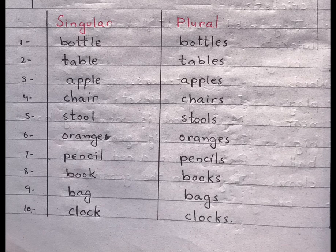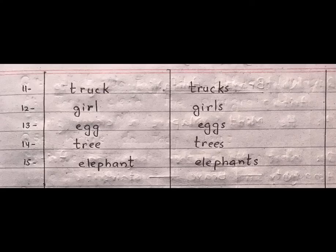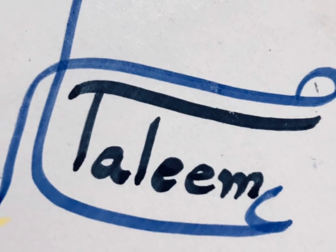Singular and plural list. Bottle — bottles. Table — tables. Apple — apples. Chair — chairs. Stool — stools. Orange — oranges. Pencil — pencils. Book — books. Bag — bags. Clock — clocks. Truck — trucks. Girl — girls. Egg — eggs. Tree — trees. Elephant — elephants.